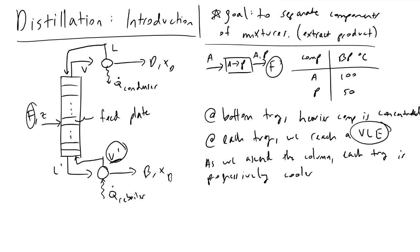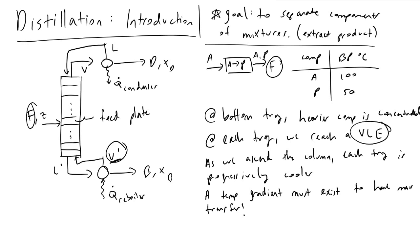A temperature gradient must exist to have mass transfer. If you're operating a distillation column in practice and you see that each tray is the same temperature, that's a bad sign — it tells you that you're not getting any better extraction by having more trays. More trays means more money and more energy supplied to the reboiler, resulting in an inefficient process.